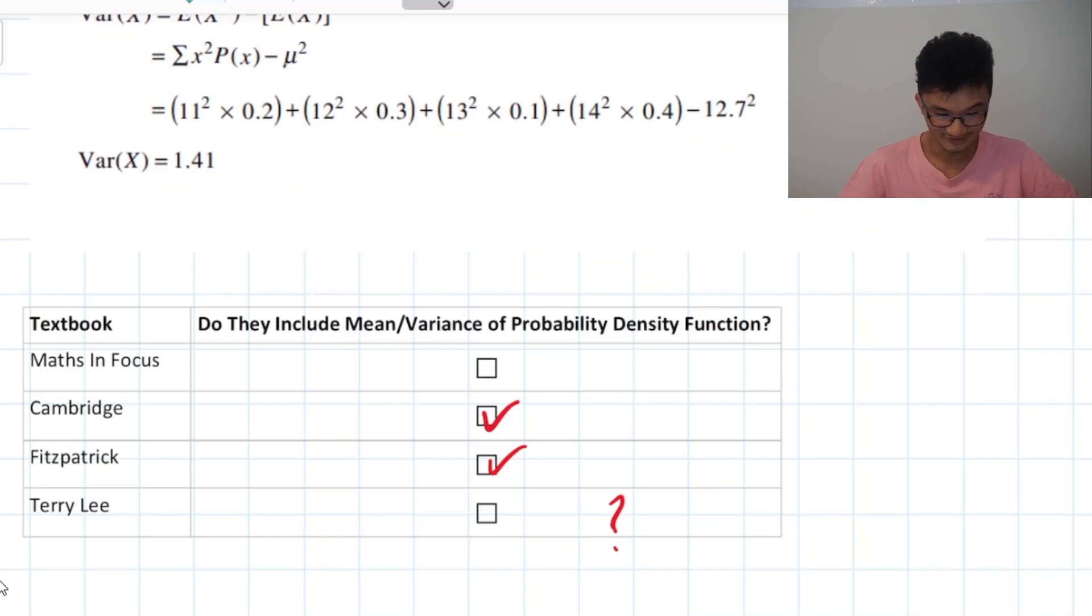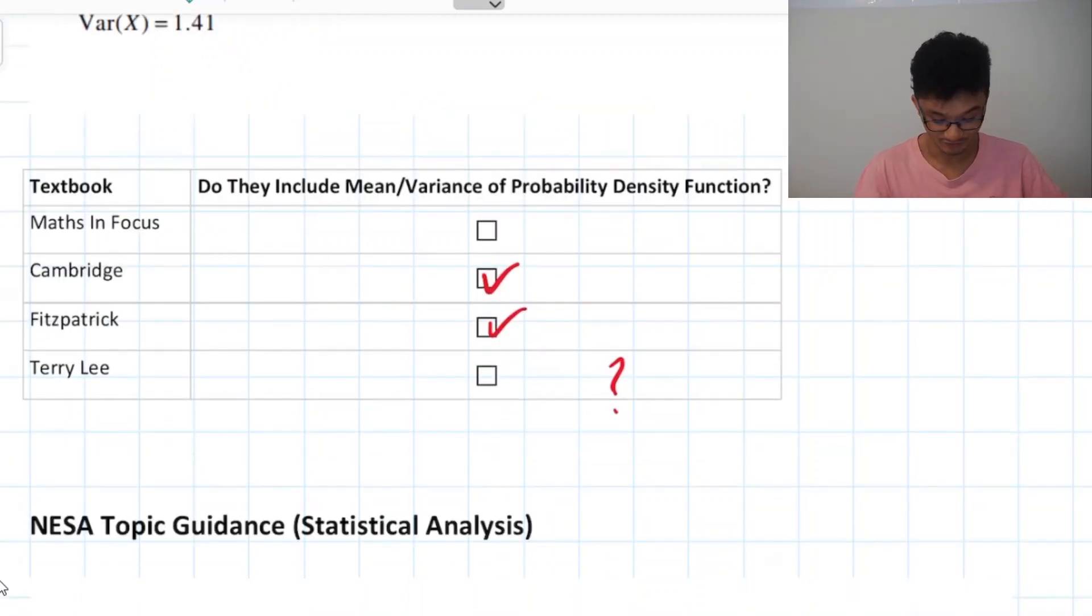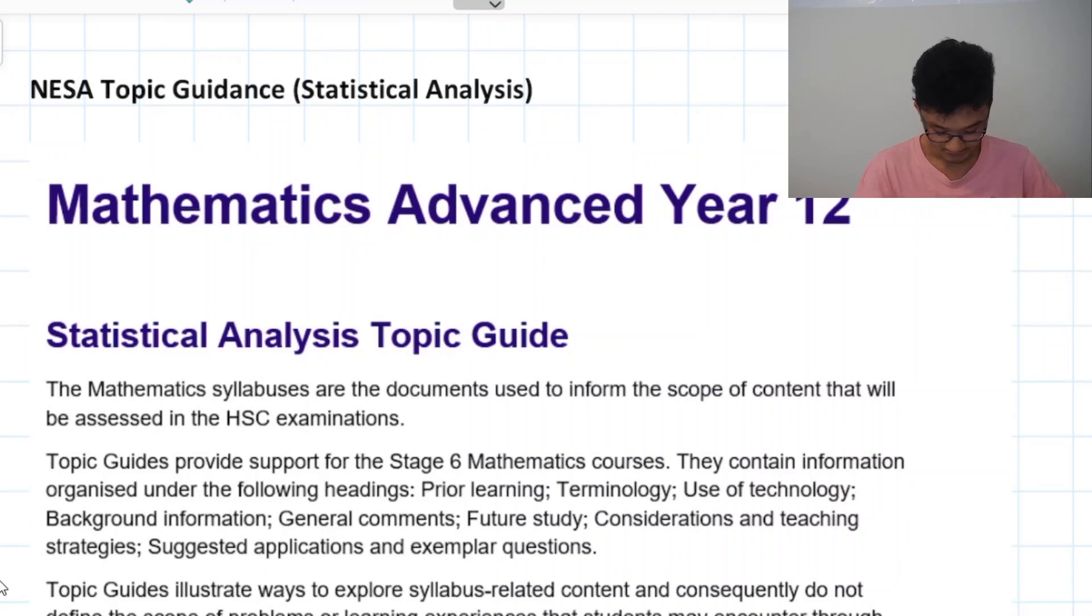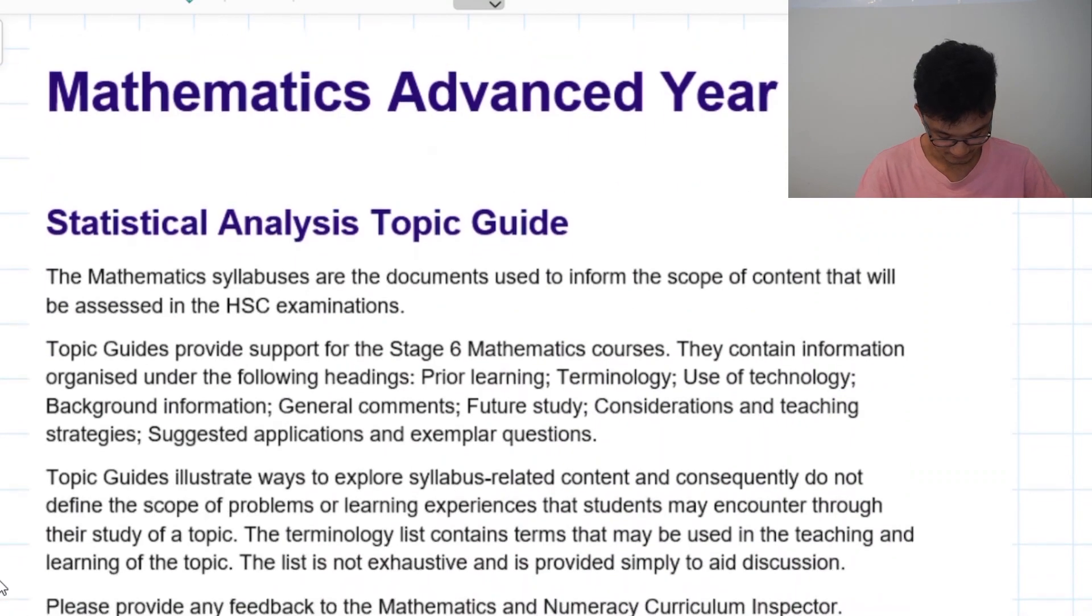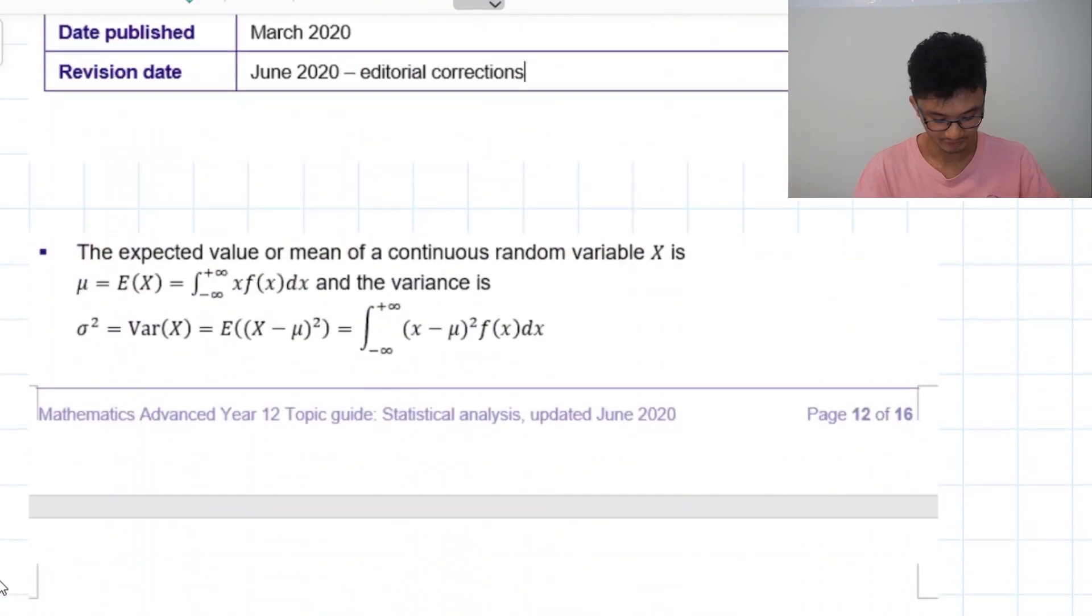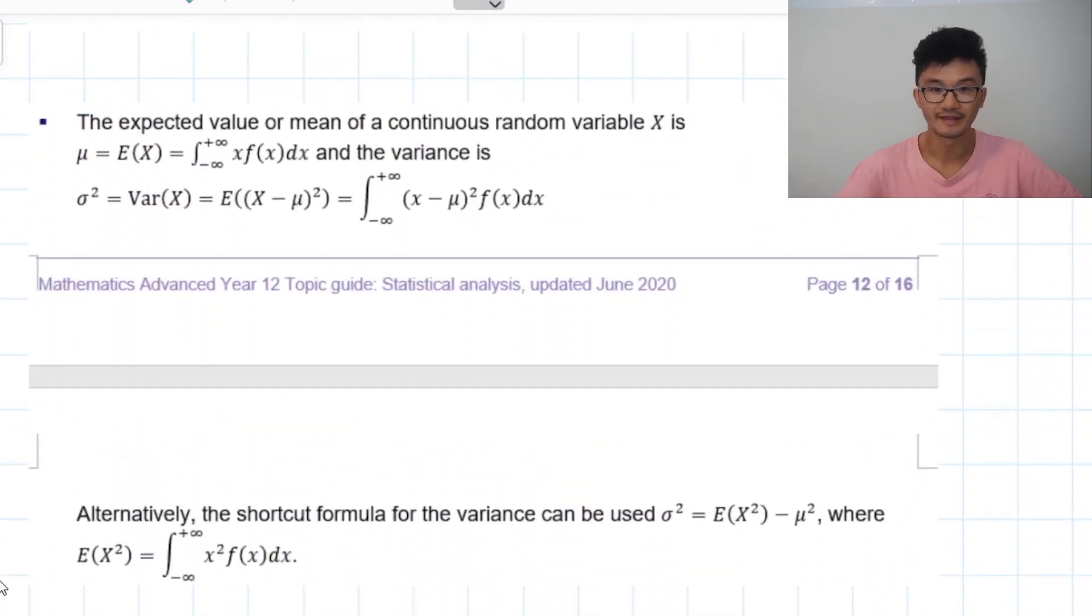So where does that leave us? Let's just add some more confusion into the mix. There's this document called the NESA topic guidance and so just to really clarify this is not a syllabus document and there's some really long disclaimer somewhere amongst all of this that it doesn't define the scope of problems that they can be asked in an HSC exam so it's used to inform the scope of content but do not define the scope of problems students may encounter.